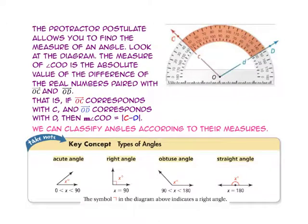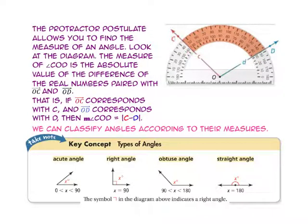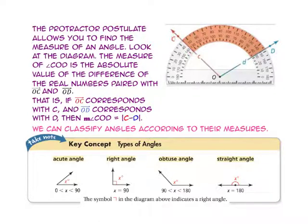The protractor postulate allows you to find the measure of an angle. The measure of angle COD is the absolute value of the difference of the real numbers paired with ray OC — here at 45 — and ray OD, here at about 148. If ray OC corresponds with C and ray OD corresponds with D, then the measure of angle COD is the absolute value of the difference of C and D. Typically we'd put one ray at 0 when measuring an angle, so we don't have to use that absolute value of the difference.